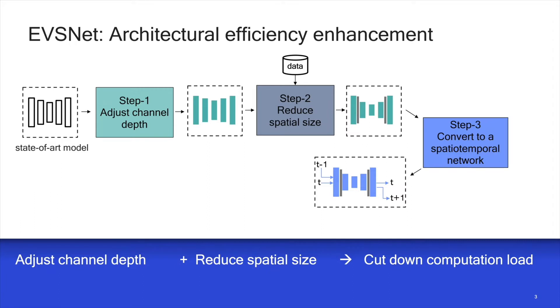Step 3 converts the network to a spatiotemporal network, taking into account both space and time characteristics of video. The previous frame's features are carried over to the current frame in compact form to allow the network to take advantage of temporal information.